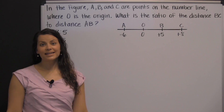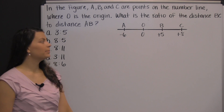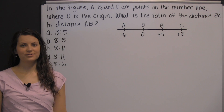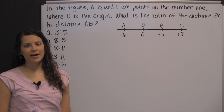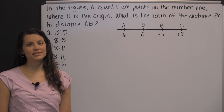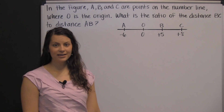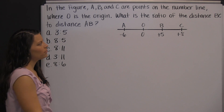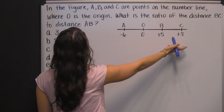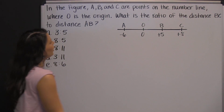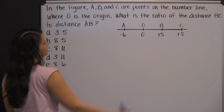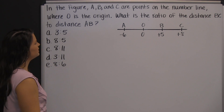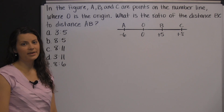The HiSET exam will test you on your ability to read number lines and your knowledge of ratios. Here's an example that combines both of those skills. In the figure, A, B, and C are points on the number line, where O is the origin. What is the ratio of the distance BC to distance AB?